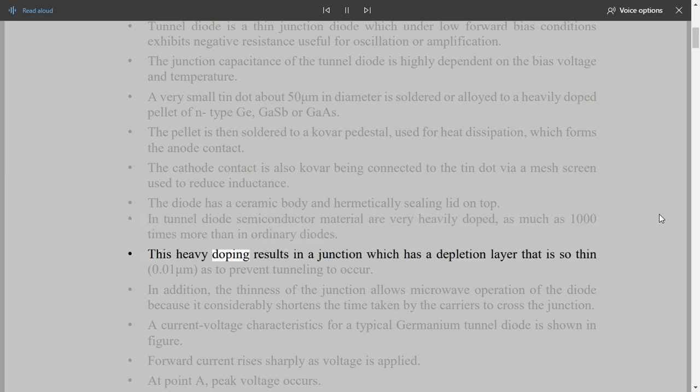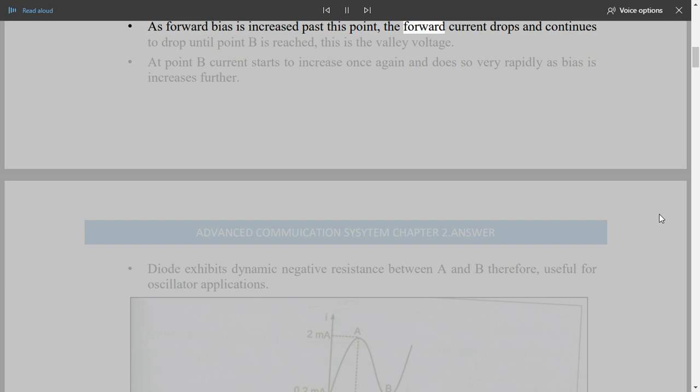The cathode contact is also covar being connected to the tin dot via a mesh screen used to reduce inductance. The diode has a ceramic body and hermetically sealing lid on top. In tunnel diodes semiconductor material are very heavily doped as much as 1000 times more than in ordinary diodes. This heavy doping results in a junction which has a depletion layer that is so thin 0.01 micrometer as to permit tunneling to occur. In addition, the thinness of the junction allows microwave operation of the diode because it considerably shortens the time taken by the carriers to cross the junction.